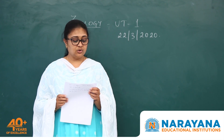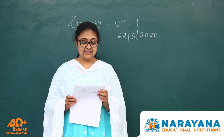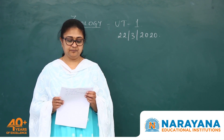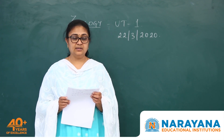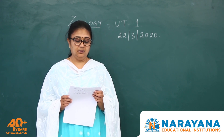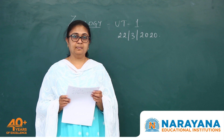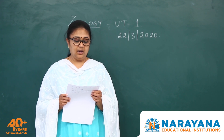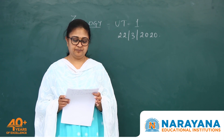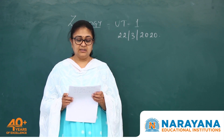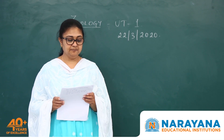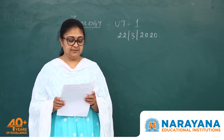In column 1, Tansley is the person who gave us the term ecosystem. Ramdeo Mishra is the father of ecology in India. Ritter gave the term ecology, and Ernst Haeckel is the person who correctly defined ecology. Thus the second option correctly matches, so that's your answer. Moving on to question number 137.